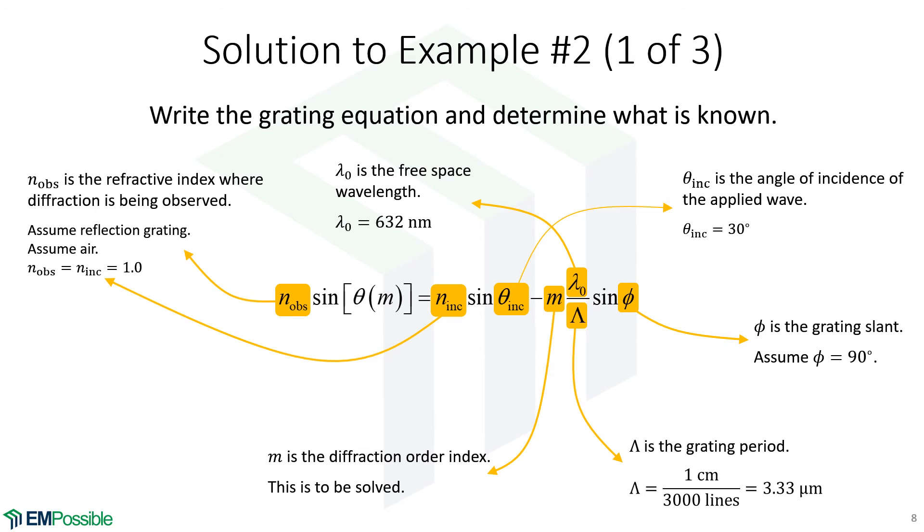The free space wavelength, that was given to be 632 nanometers, and that's about red light. Last, the angle of the diffraction orders. We're not necessarily going to solve for that, but we're going to count values of m that lead to real values of the angle as a diffraction order that is not cut off. Any values of m that produce an angle that is an imaginary complex number is a cutoff diffraction order. We will ignore that.